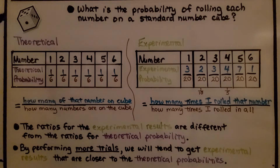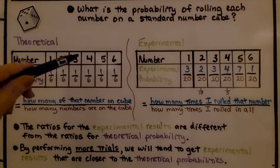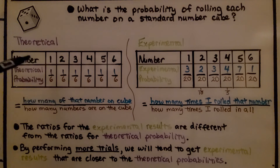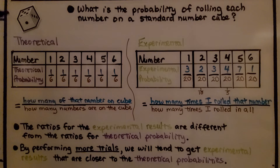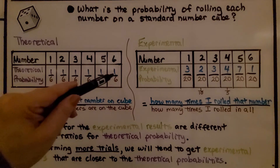Now here we have a number cube. What is the probability of rolling each number on a standard number cube? Well, theoretically, we have the numbers one, two, three, four, five, and six, and there's only one of each number. So the theoretical probability is one sixth for each one.